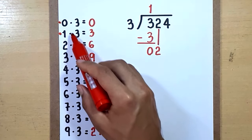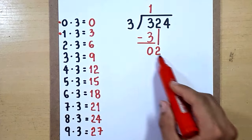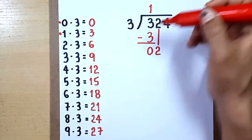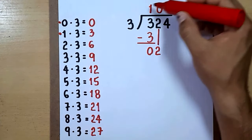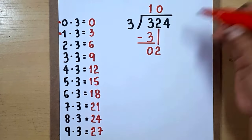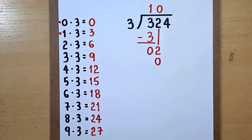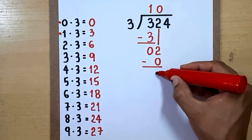Because 1 times 3 equals 3, and 3 is more than 2, so we stay with 0. You write 0 here. Since 0 times 3 equals 0, we write 0 below this 2 and we subtract: 2 minus 0 equals 2.